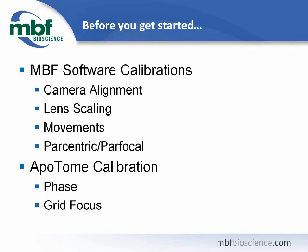In addition, to use the Apatome, which is only available through Zeiss, you need to calibrate it as well. There are two phases of calibration: phase calibration and grid focus.